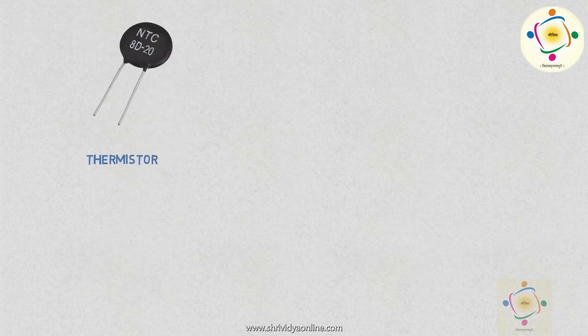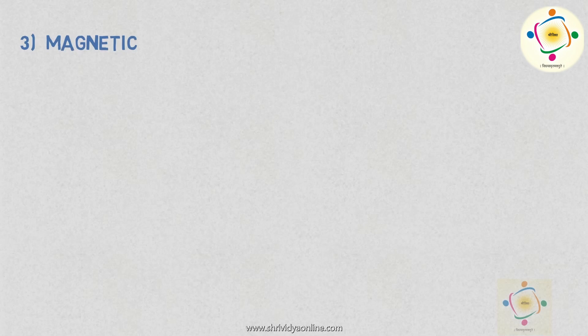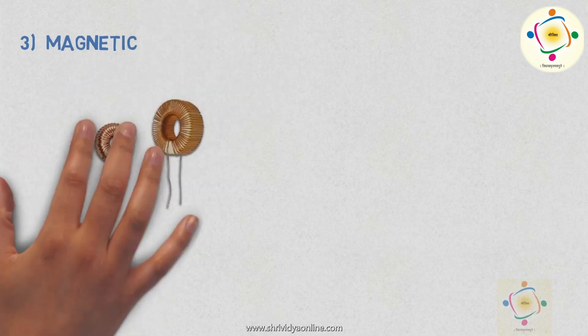The third one is magnetic transducers. The example of magnetic transducers is induction coil or surge coil.